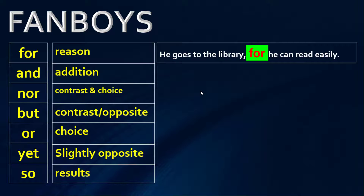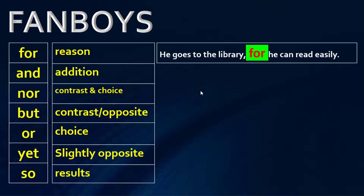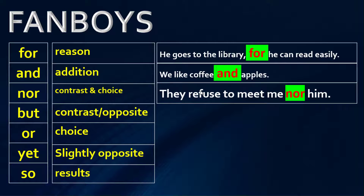Now look at the examples. 'He goes to the library, for he can read easily.' Here 'for' means 'because' — he goes to the library because it is a good place for him to read. For 'and': 'We like coffee and apples.' As you know, conjunctions are used to join ideas and elements, so we use 'and' here to join coffee and apples.